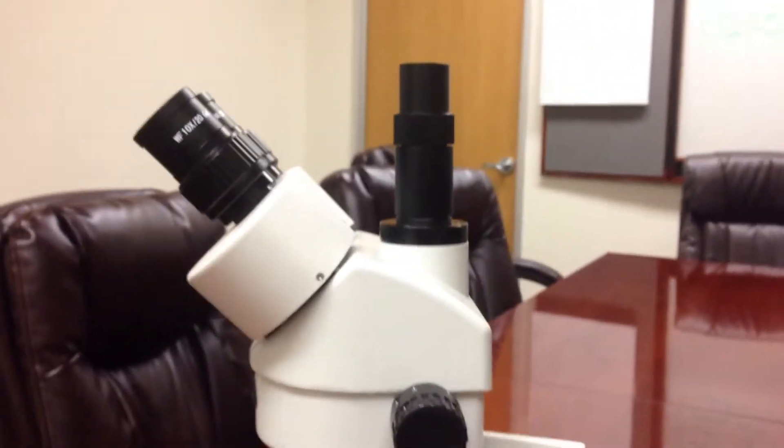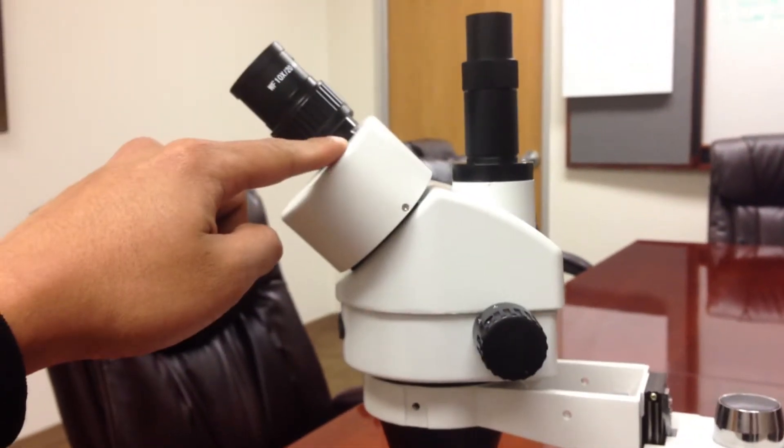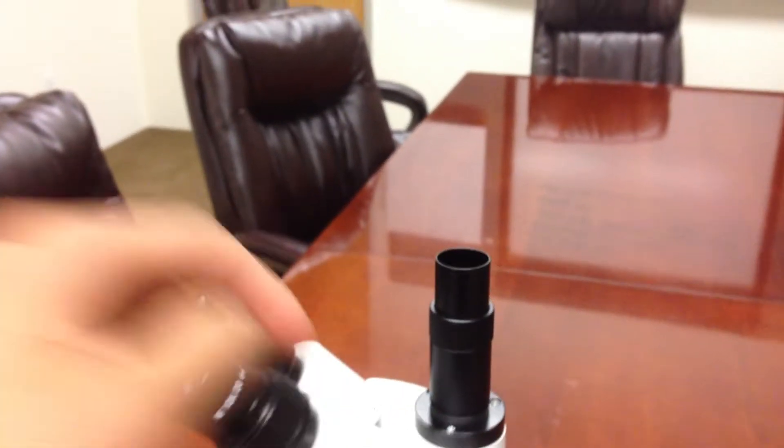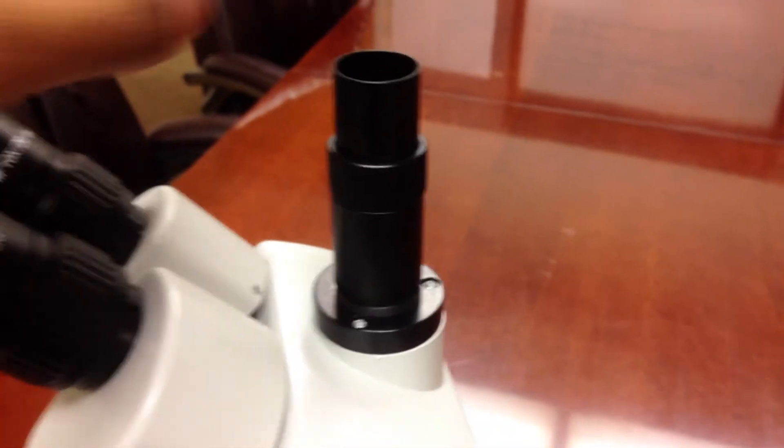So basically, if you're attaching it to an SM microscope like this one, this is a stereo zoom microscope, some of them come with a trinocular head. And trinocular meaning that there's three ports. So you have the two eyepieces and the third port. The third port is the trinocular port.